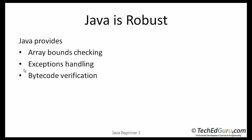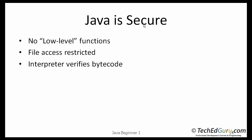Java provides array bounds checking, exception handling, and bytecode verification — all of these features make Java very robust. Java is also a very secure programming language. It does not have any low-level functions, file access can be programmatically restricted, and when you run the code the interpreter verifies the bytecode, making Java programs secure.